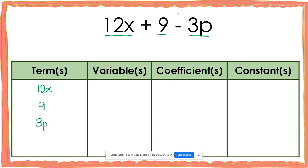My variables for this are going to be both x and p. When I go to find my coefficients, I need to remember that every time I have a variable, I have a coefficient. In this expression, I had two variables, which means I should have two coefficients. I notice that x is being multiplied by 12, so the coefficient of x is 12. Then I notice that p is being multiplied by 3, so the coefficient of p is 3. Finally, I noticed that I have 9 here that does not have a variable, which means that 9 is a constant.